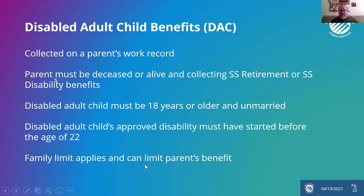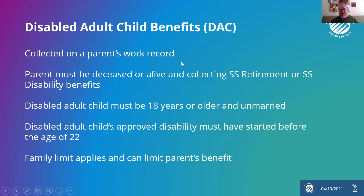However, a family limit does apply and can limit the parent's benefit. We had a situation where a husband and wife got a notice that the wife's claiming amount on the husband was being reduced because an adult child was awarded a disabled adult child benefit in her 30s. He had not had contact with his adult child for years and was surprised. Her claiming basically reached the cap of the family limit, so his wife's Social Security income was reduced. It's a system that most professionals really struggle to understand because it kind of goes against some of the other rules we talked about. There are definitely advantages to it, but there can be some drawbacks as well.